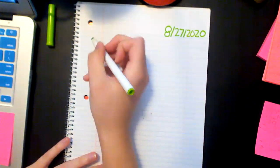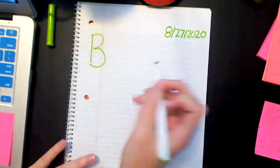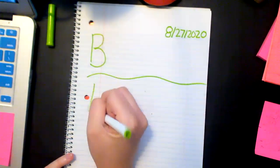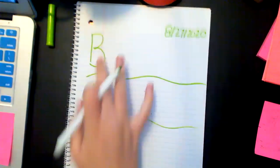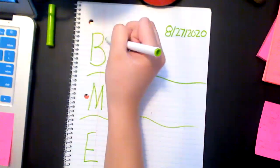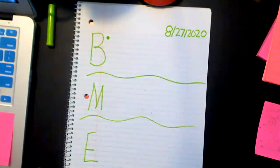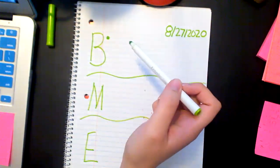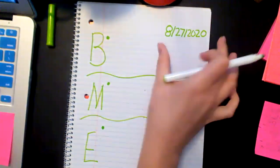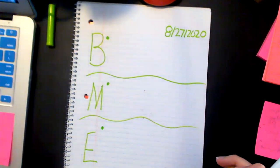Now we have our date and we're going to start setting up our beginning, middle, and end sections. Go ahead and make a gigantic B, then a squiggly mark and make an M for middle, and then an E for end — B, M, E: beginning, middle, and end. We read the book over again and wrote a sentence or phrase explaining what happened in the beginning, middle, and end of the book, and then drew a little picture next to each part to help us remember.